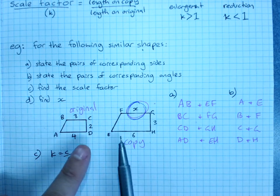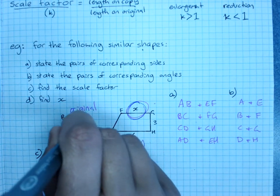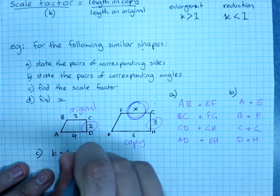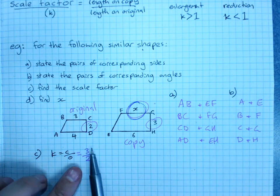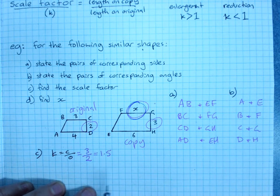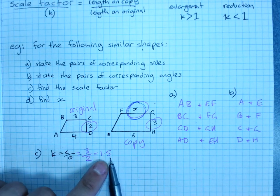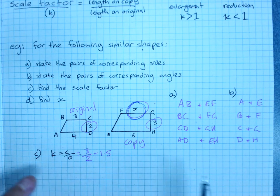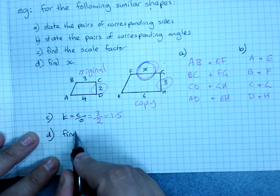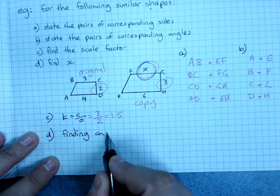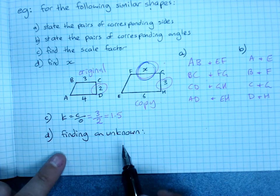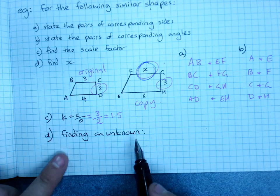Pick a pair of matching sides, let's go CD and GH. Copy over original is 3 over 2. You might as well leave it as a fraction, but you could take it to 1.5. That is your enlargement factor.